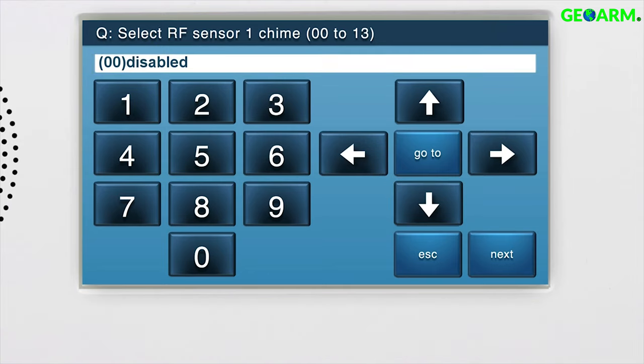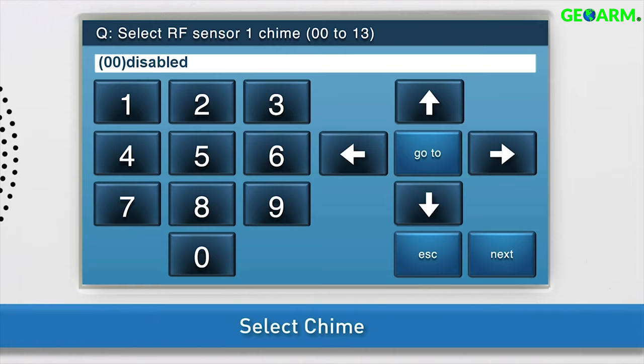Lastly, the panel can be made to enunciate sensor names by selecting a chime. Use the right arrow to scroll through a list of chime options. Once the desired option displays in the answer box, press the down arrow to go to the summary page.